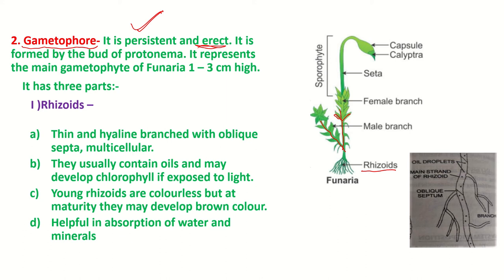The rhizoids of Funeria are thin, branched, and have oblique septa — the same as observed in the rhizoidal branches of the protonema. These rhizoids may contain oil droplets, and if exposed to light they can also develop chlorophyll. When young they are colorless, but at maturity they develop a brown color. The main function of rhizoids is absorption of water and minerals.